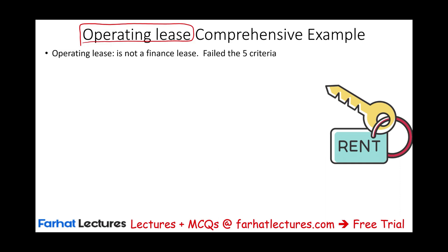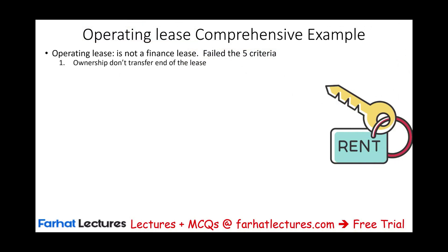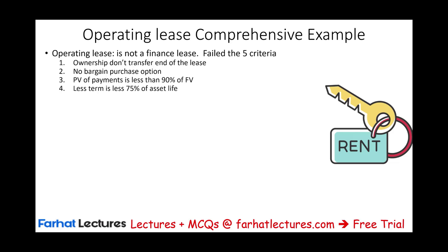An operating lease is not a finance lease. It's a lease that failed the five criteria, because if it had not failed them, it would have been a finance lease. Those five criteria are: one, no ownership transfer at the end of the lease; two, no bargain purchase option — the lessee doesn't have an incentive to buy the asset; three, the present value of the payments is less than 90% of the fair value of the asset; four, the lease term is less than 75% of the asset life; and five, the asset is not specialized, meaning it can be leased again to another party. Because it failed all of those, we have an operating lease.